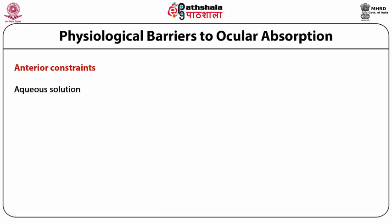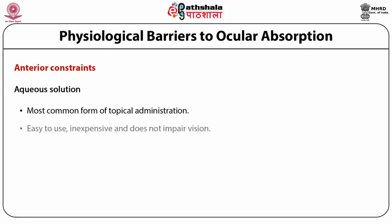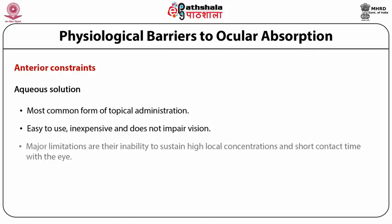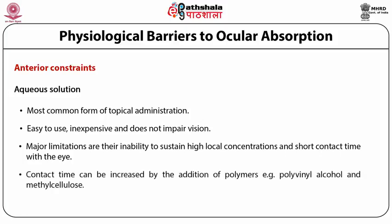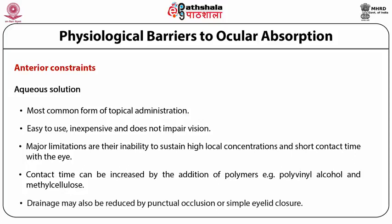Among conventional ocular dosage forms, aqueous solutions are the most common. They are easy to use, inexpensive, and do not impair vision. Their major limitations, however, are inability to sustain high local concentrations and short contact time within eye tissue. Contact time can be increased by addition of polymers such as polyvinyl alcohol and methyl cellulose. Drainage may also be reduced by punctal occlusion or simple eye lid closure.